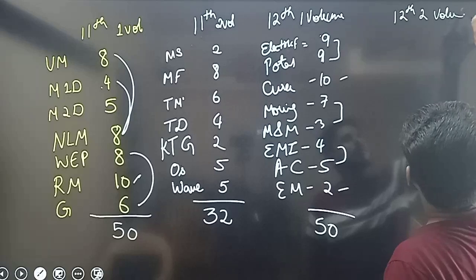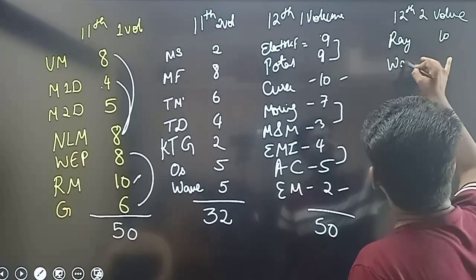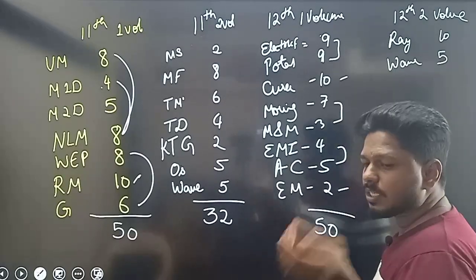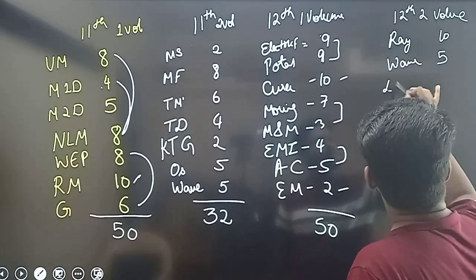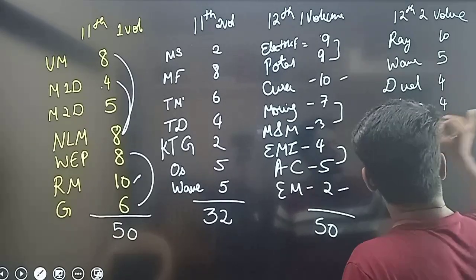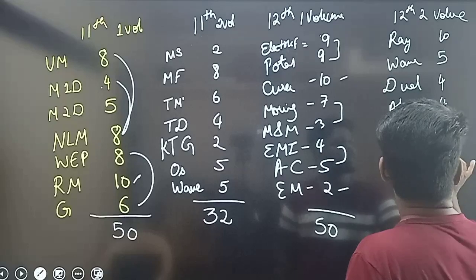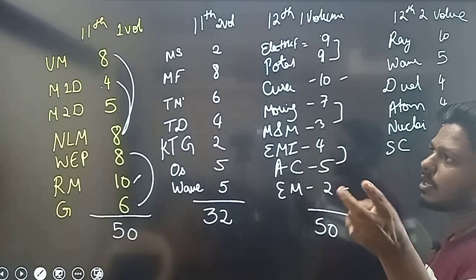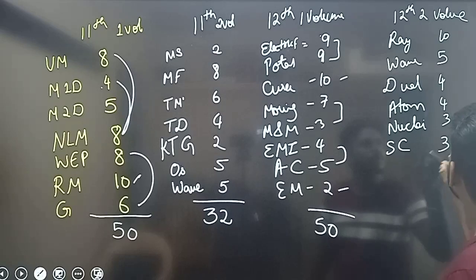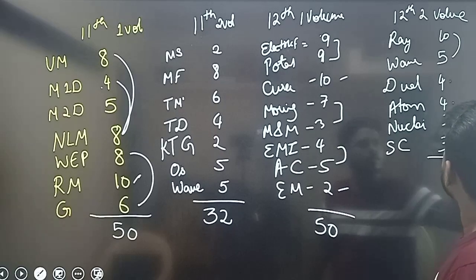12th second volume: Ray optics — 9 to 10 lectures. Wave optics, diffraction, polarization: 4 to 5 lectures. Dual nature: 4 lectures. Atom: 4 lectures. Nuclei: 3 lectures. Semiconductor — transistor is deleted; focus is on basic diode, diode applications, and logic gates. Total approximately 30 lectures.